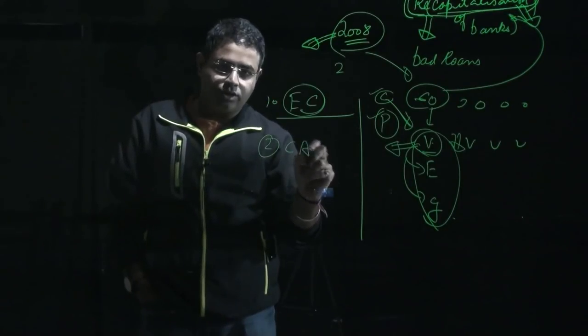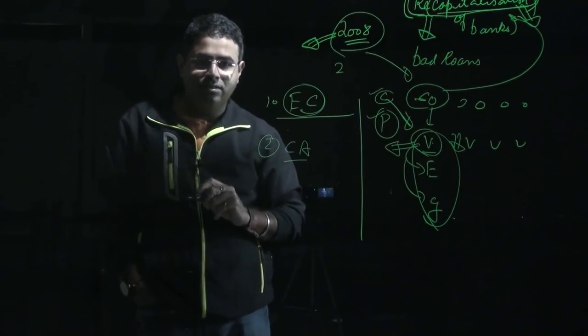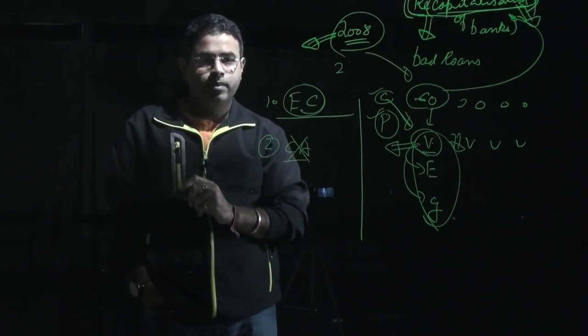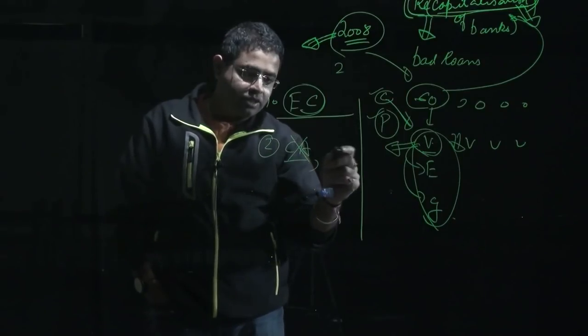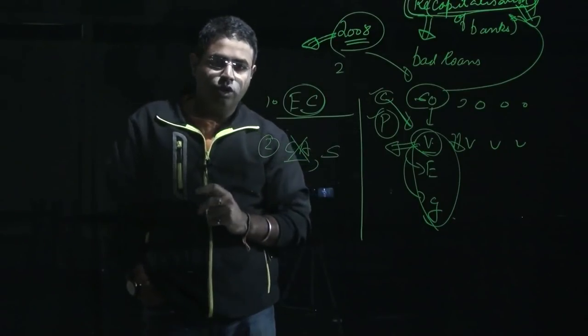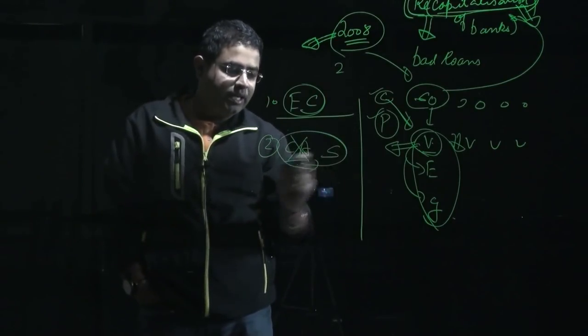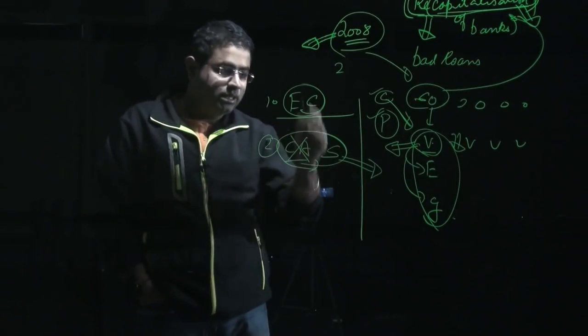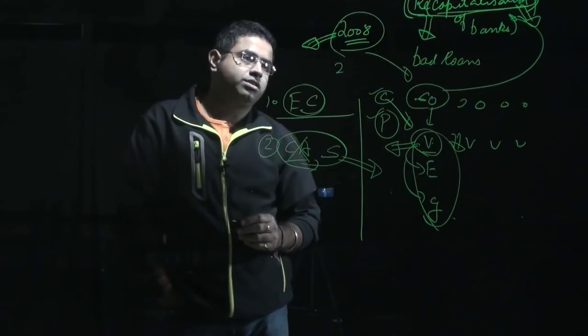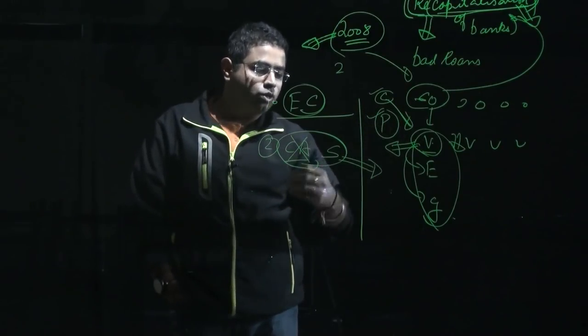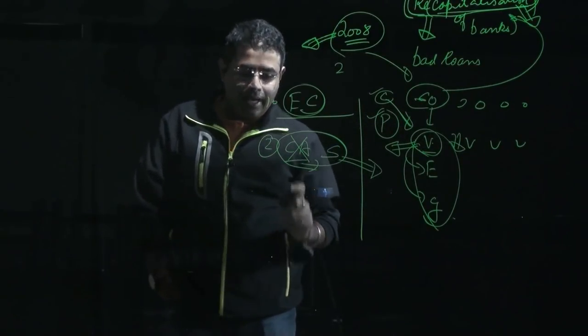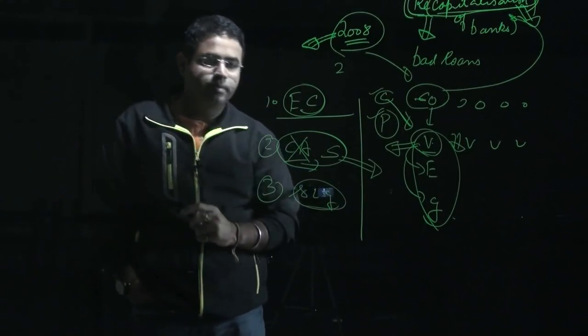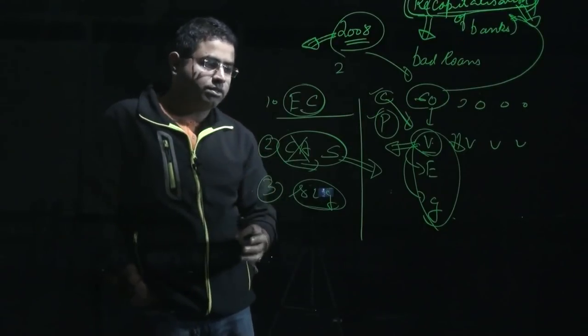And second is because of the coal allocation - the coal leases were de-notified by the Supreme Court. And the same thing has also happened with respect to the spectrum issue. So a lot of the companies have actually failed because of these corruption issues and these are the two potent reasons why the banks could not get back their money. And thirdly, the reason was actually the slowdown in the global economy.